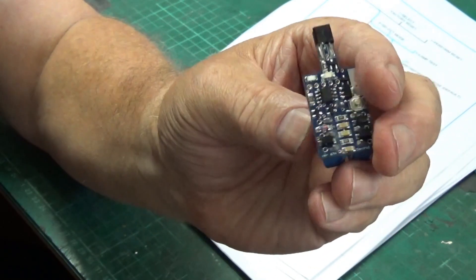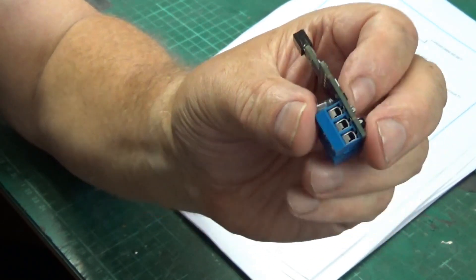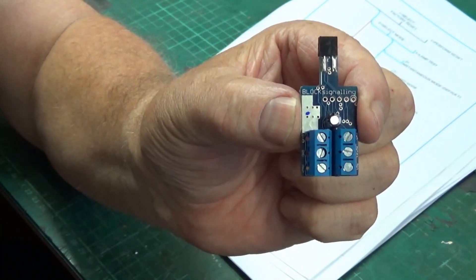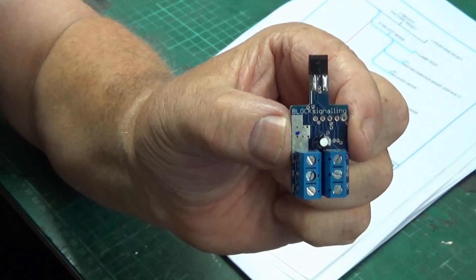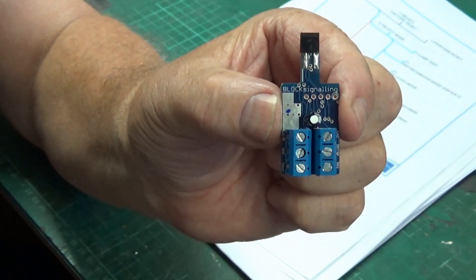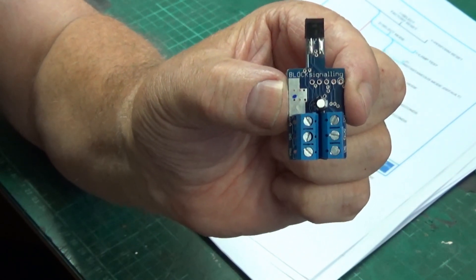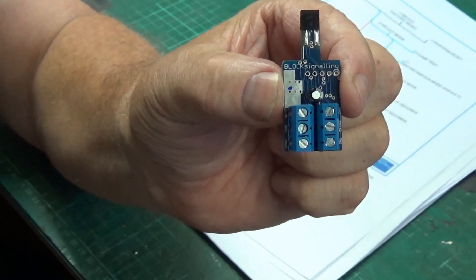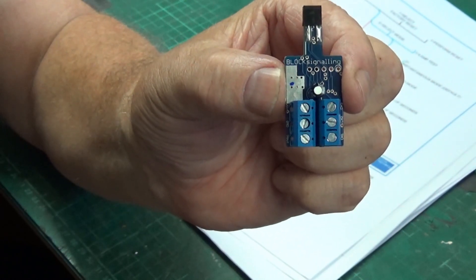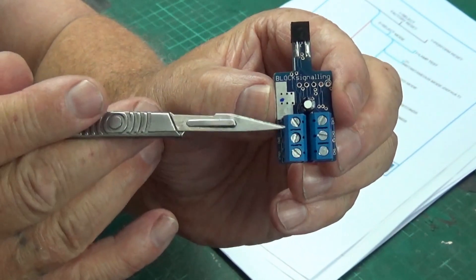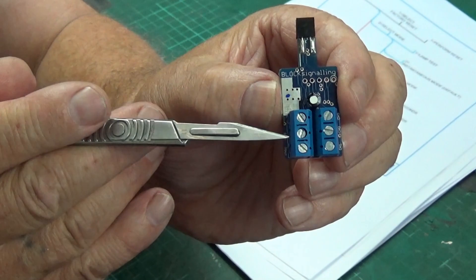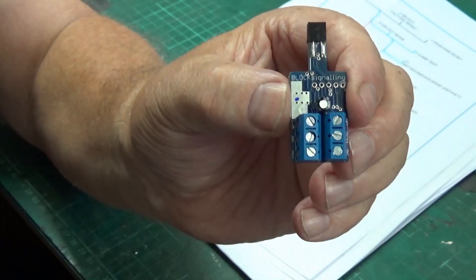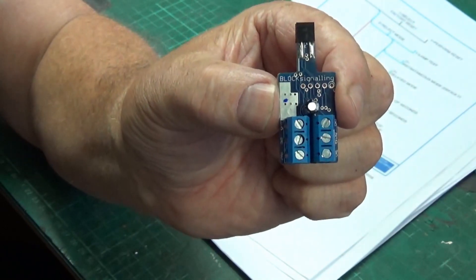The voltage that the module can run from is between 12 and 25 volts DC or 12 and 16 volts AC. Now I'm running mine off AC current because I've got mine connected up to the DCC bus, which is simply done through these two terminals here, the positive in and the negative in. I've just got mine connected up to the DCC bus like all the other ones, and they all work absolutely fine.